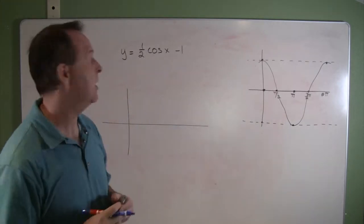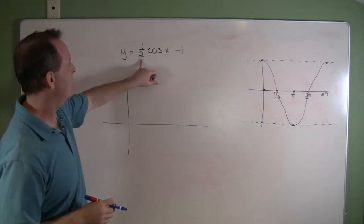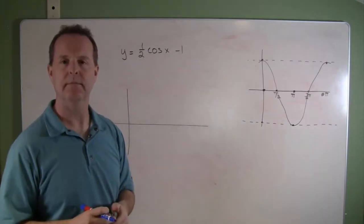All right, take a moment and look at this equation we have above us. Y equals one-half cosine x minus 1.